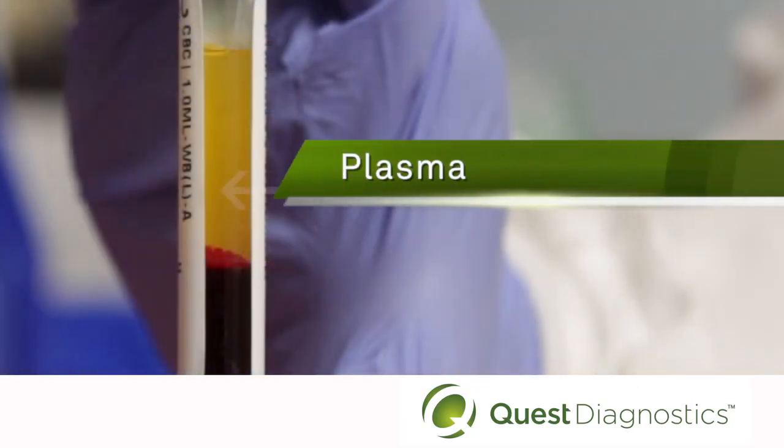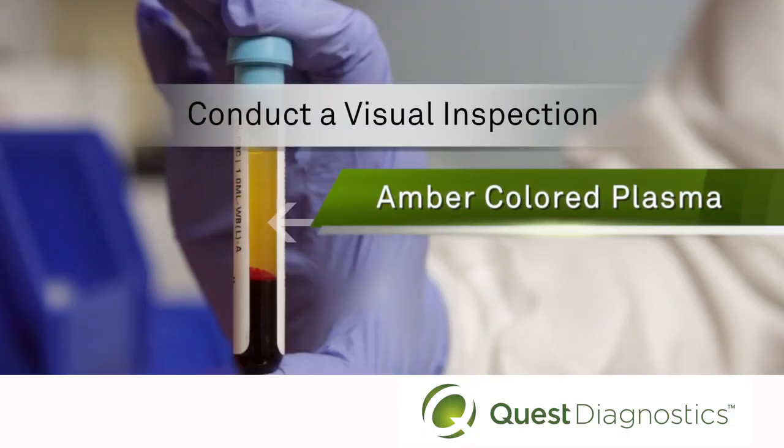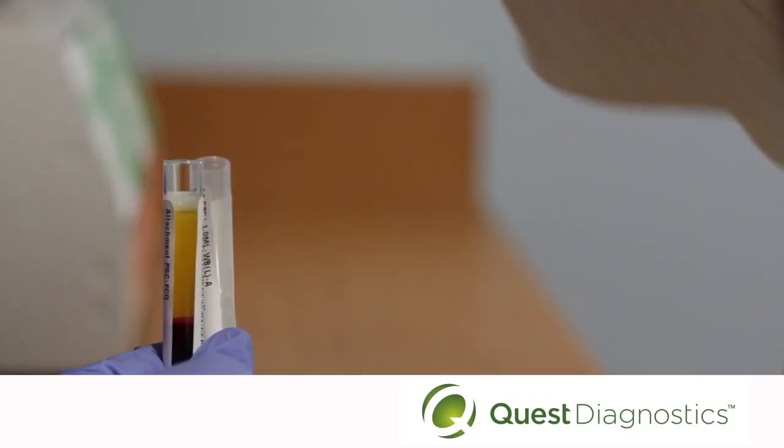These layers are the plasma, the buffy coat, and the cell layer. The plasma layer should be amber in color. If the plasma appears red-tinged instead of amber, your specimen is hemolyzed and will require recollection. Your next step is to remove the plasma layer, being very careful not to disturb the buffy coat layer or cell layer.